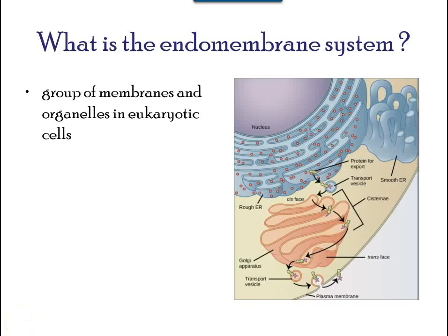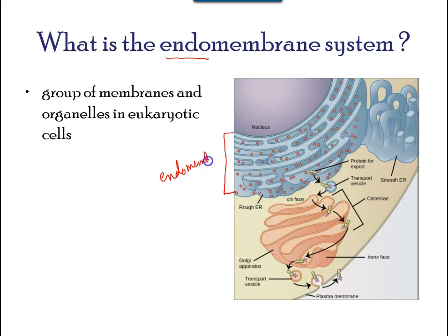The endomembrane system, endo meaning within, is a group of membranes and organelles in eukaryotic cells that work together to modify, package, and transport lipids and proteins. It includes the nuclear envelope, lysosomes, vesicles, the endoplasmic reticulum, and the Golgi apparatus, which we will be covering shortly.